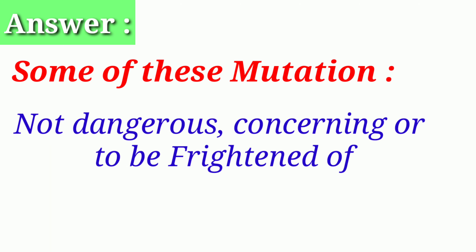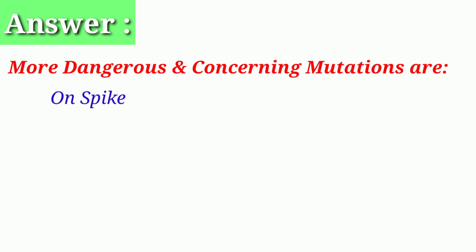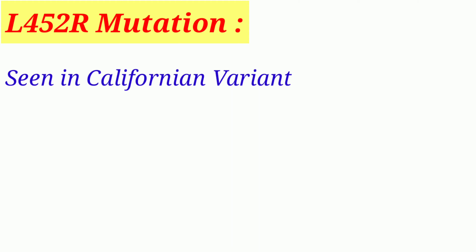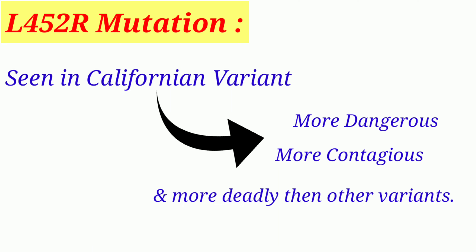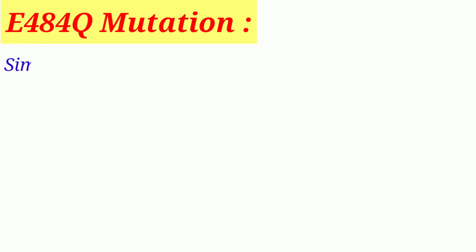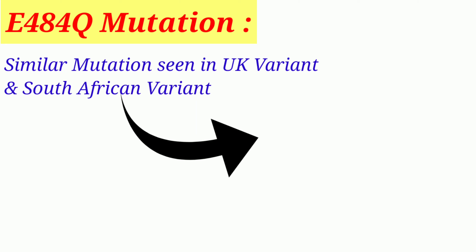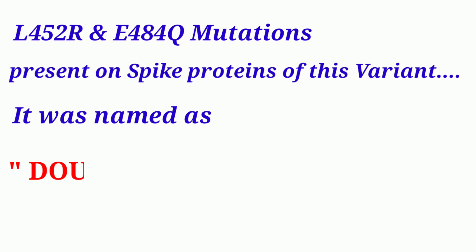The answer is that some of these mutations are not that dangerous or concerning right now. The more dangerous and concerning mutations of this variant are found on the spike proteins. They are known as L452R and E484Q. The L452R mutation was also seen in the California variant, which is more dangerous, more contagious, and more deadly than other variants. The E484Q mutation was found to be similar to mutations seen in the UK variant and the South Africa variant, both of which are also more dangerous, more contagious, and more deadly. Based on these two dangerous mutations present on the spike proteins, this variant was named the double mutation variant.